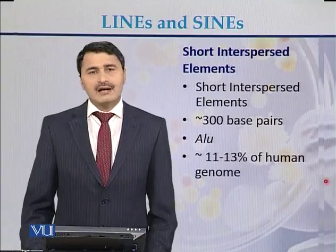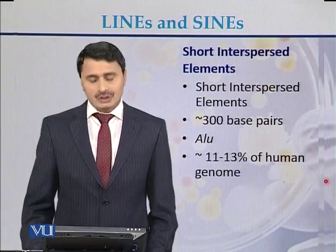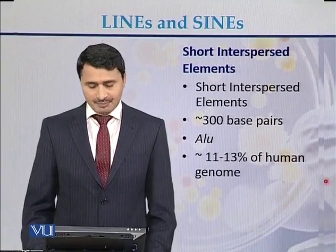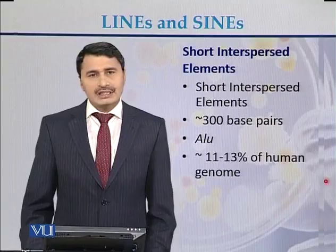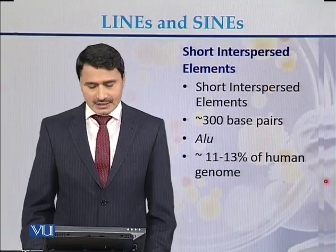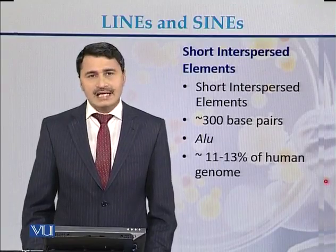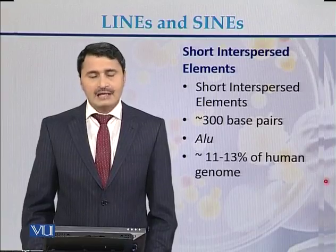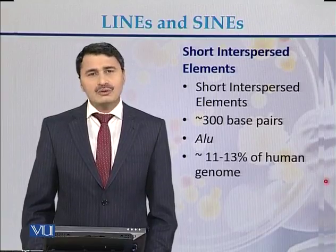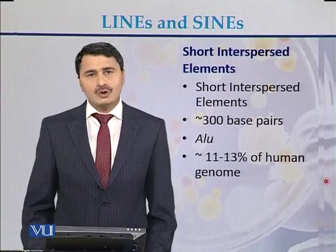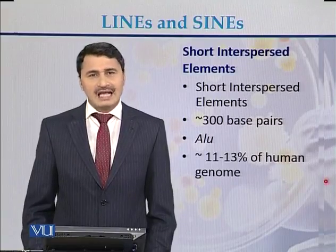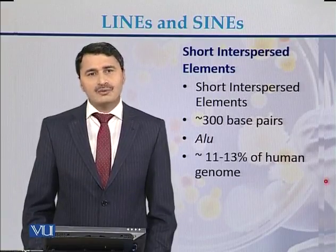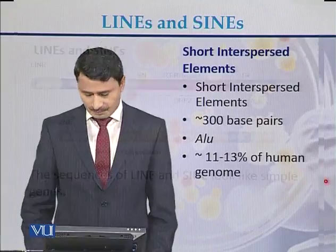Short interspersed nuclear elements (SINEs) are approximately 300 base pairs in size. The most common SINEs are called ALU elements, and in the human genome they make up approximately 11% to 13% of the total genome.